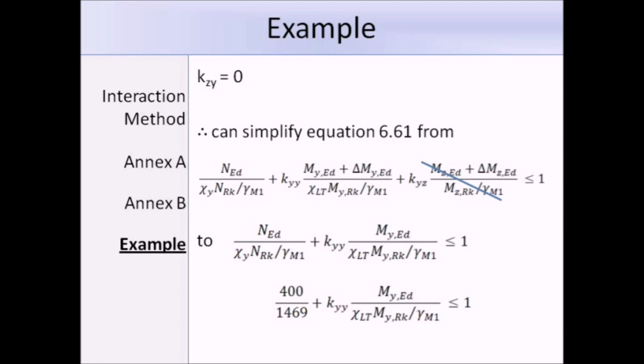We know that KZY is equal to 0, and that simplifies equation 6.61 down a bit. We can work out the first term of this equation. The axial force NED is 400 kN. We said before that CHI times NRK over gamma M1 equals NBRD, which is the design buckling resistance. From the buckling resistance summary, that value is 1469 kN for the y-axis. So, we have 400 over 1469 as the first term in equation 6.61.